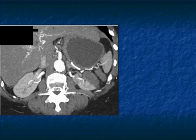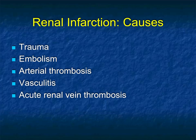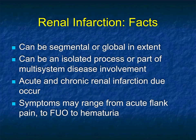One thing I find helpful: renal infarcts usually are sharper than infection. Infection is more diffuse — it can be sharp, but infarcts tend to be sharper. Causes of infarcts include trauma, embolism, thrombosis, vasculitis, and renal vein involvement — all possibilities. Renal infarcts can be segmental or global, an isolated process or part of a multi-organ system process. They can be chronic in nature, and symptoms can range from pain to fever to hematuria. So it's often a surprise diagnosis.